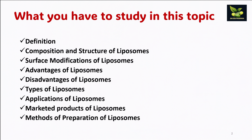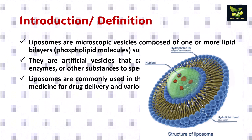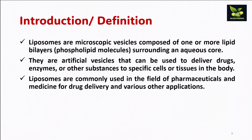So what are liposomes? Liposomes are microscopic vesicles which are composed of one or more lipid bilayers surrounding an aqueous core. They are artificial vesicles which can be used to deliver drugs, enzymes, and other substances to specific cells or tissues in the body. We will be seeing the main reasons for their variety of applications and how they are commonly used in pharmaceuticals and medicine.